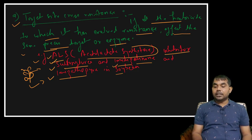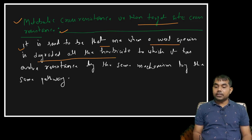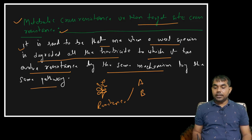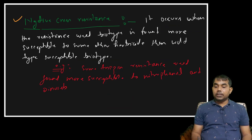Metabolic cross resistance, also called non-target site cross resistance, occurs when a weed species degrades all herbicides to which it has evolved resistance by the same mechanism and pathway. For example, if a weed is resistant to herbicides A, B, C, and D, and it degrades all four by the same mechanism and pathway, then we call it metabolic cross resistance.